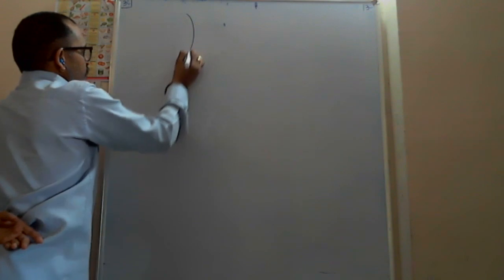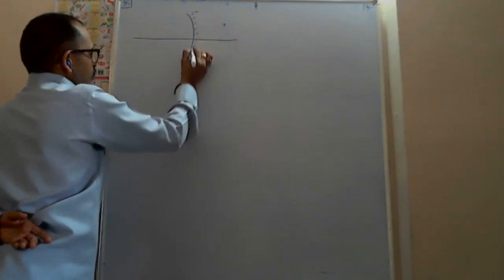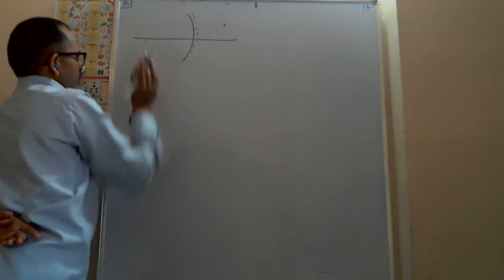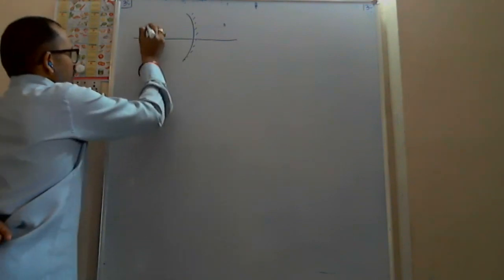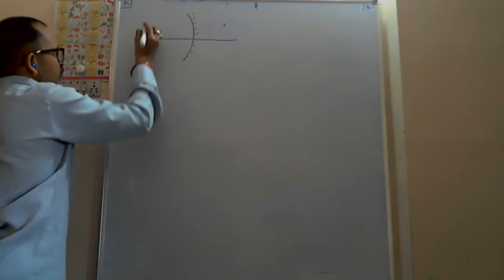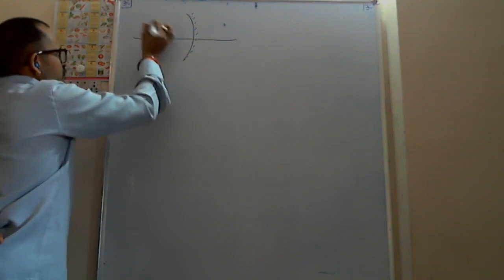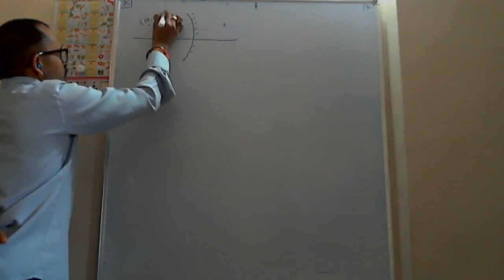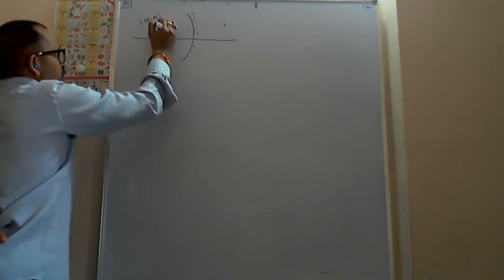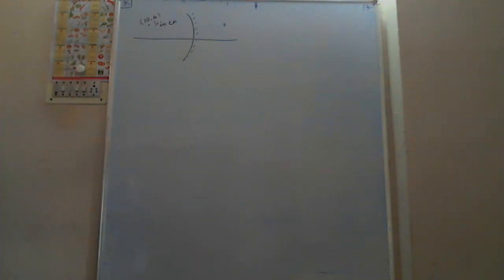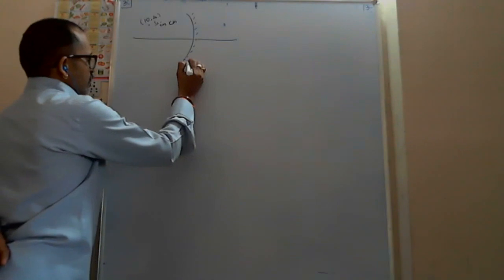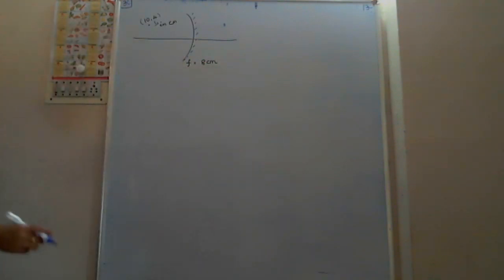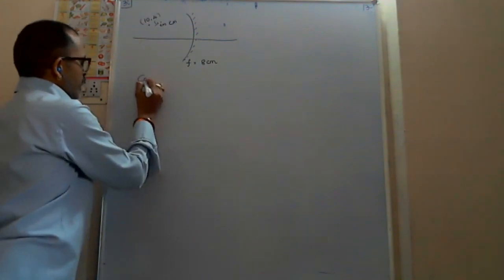Suppose this is one concave mirror. Generally, where do we take the object? On the principal axis. But I'm taking the object somewhere here, not on the principal axis. I'm giving it coordinates: the X coordinate is 10 centimeters and Y coordinate is 4 centimeters. Both are in centimeters. The focal length is equal to 8 centimeters. Then, what will be the coordinates of the image?